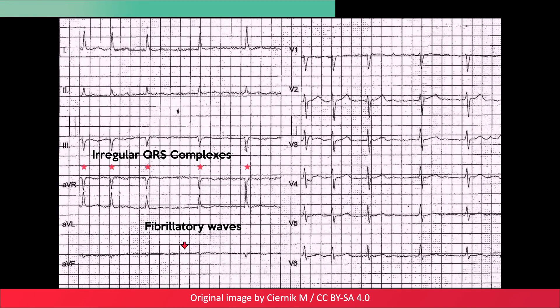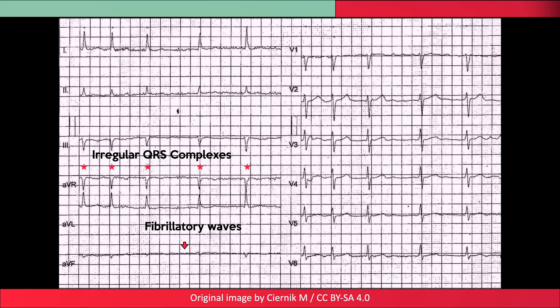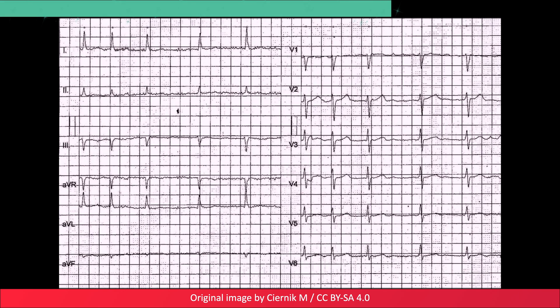Since the RR intervals are irregular, the ventricular rate cannot be calculated in the classical sense. Instead, you have to count the number of QRS complexes within a 6-second interval and then multiply by 10.